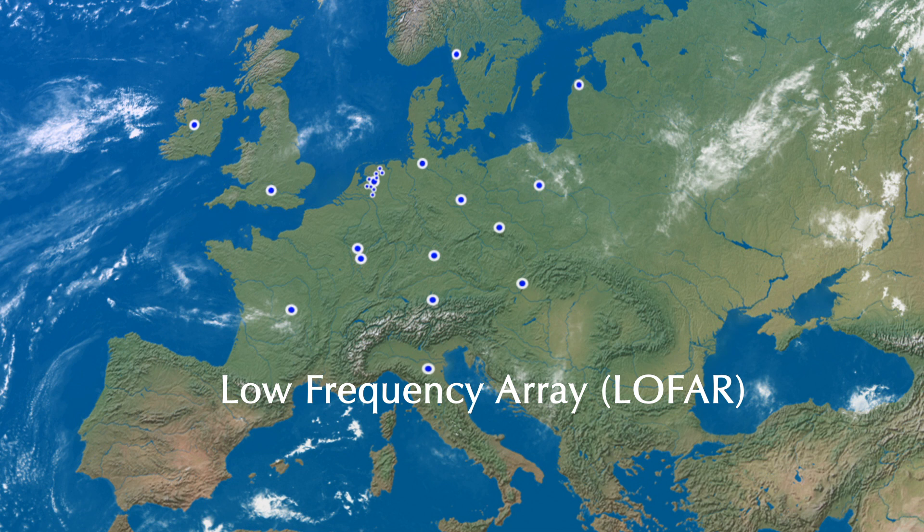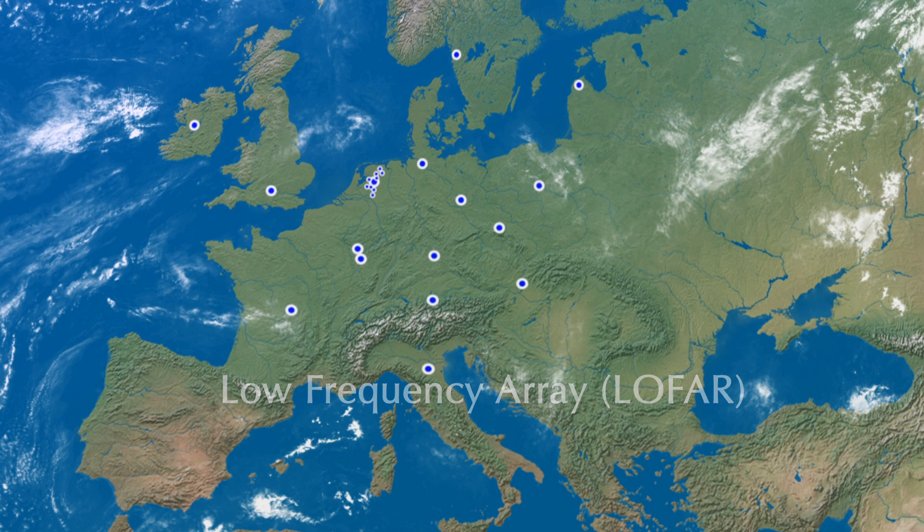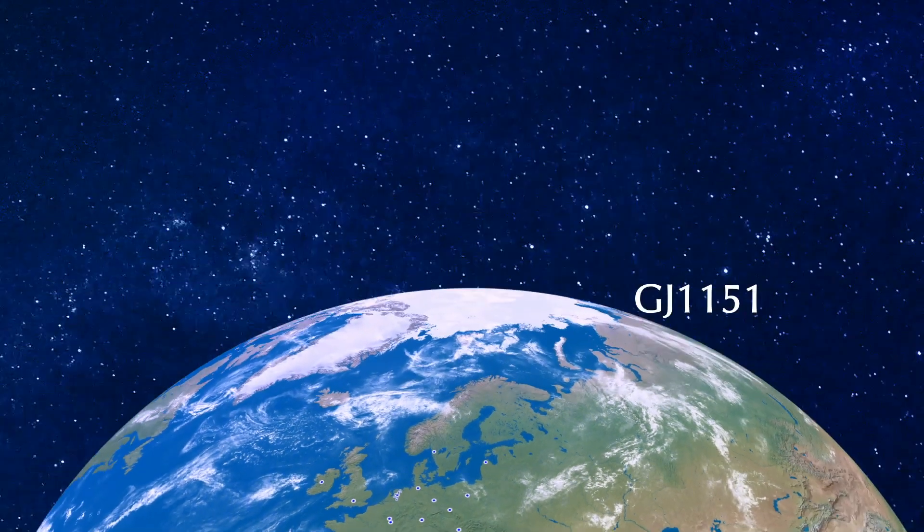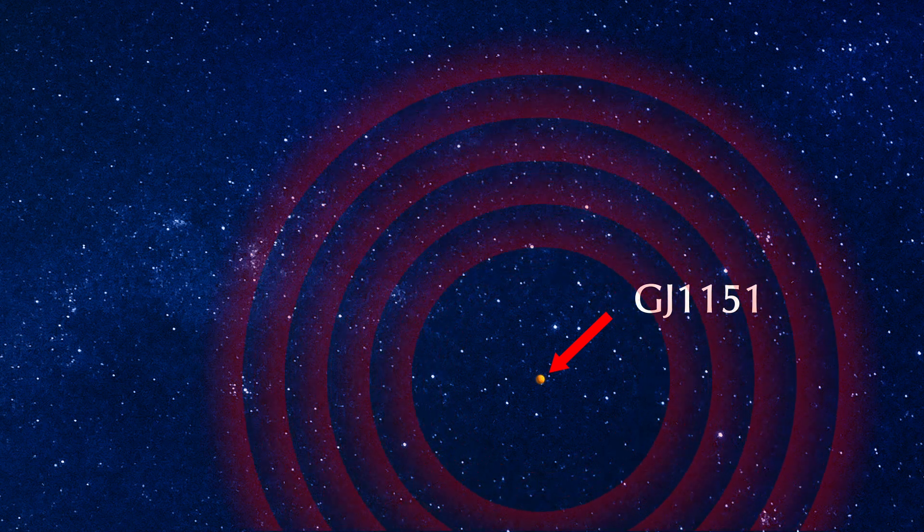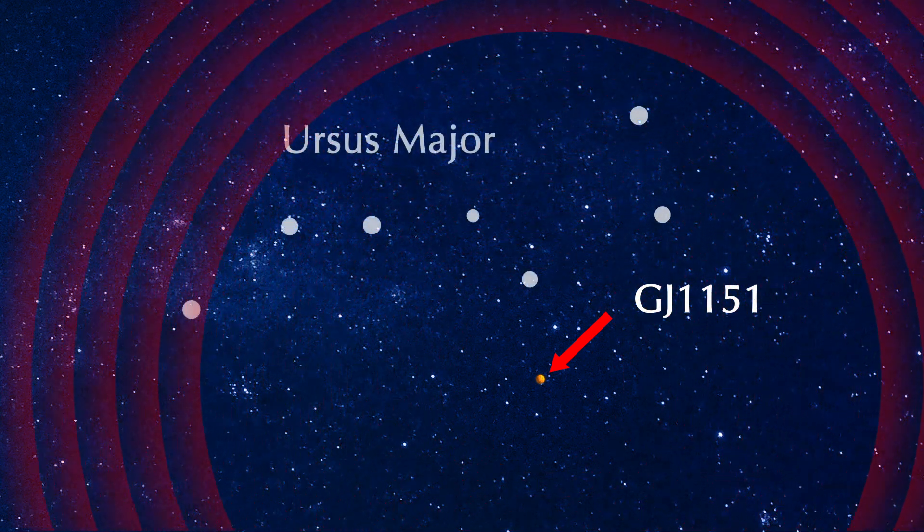On 16 June 2016, the astronomers spotted an intriguing signal coming from GJ 1151, an ordinary red dwarf star 26 light-years from Earth in the Ursa Major constellation.